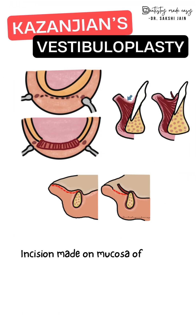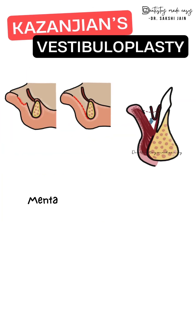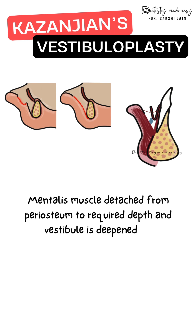For the technique, first an incision is made in the mucosa of the lower lip, and a large flap of the labial and vestibular mucosa is retracted. Next, submucosal dissection is performed from the inner aspect of the lower lip to the mucogingival junction. The mentalis muscle is then detached from the periosteum to the required depth, and the vestibule is deepened by supraperiosteal dissection, keeping the periosteum intact.